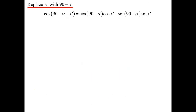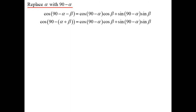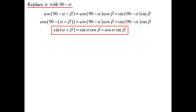Let's create another formula. Going back to our original formula and replacing alpha with 90 − α: cos((90 − α) − β) = cos(90 − α)cos β + sin(90 − α)sin β. Factoring the negative: cos(90 − (α + β)). Using complementary ratios, cos(90 − θ) = sin θ and sin(90 − θ) = cos θ. So we end up with sin(α + β) = sin α cos β + cos α sin β.